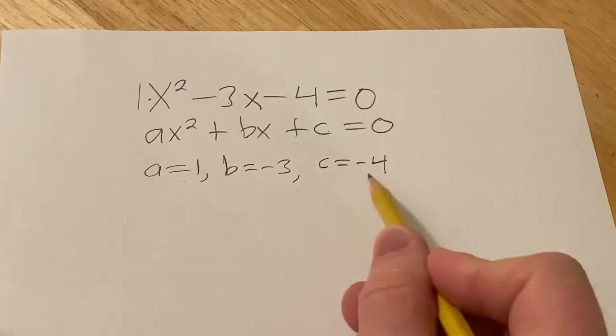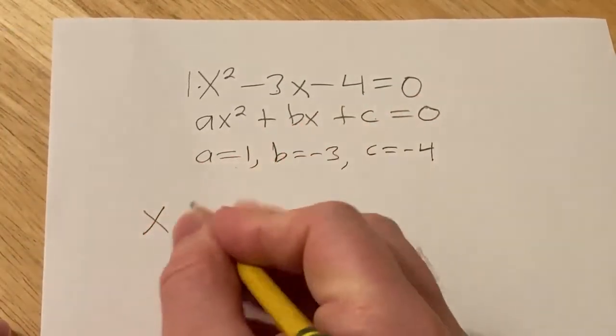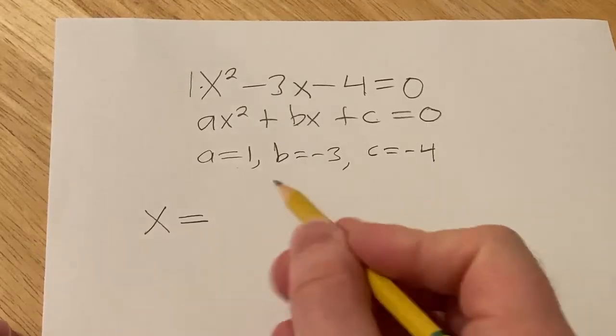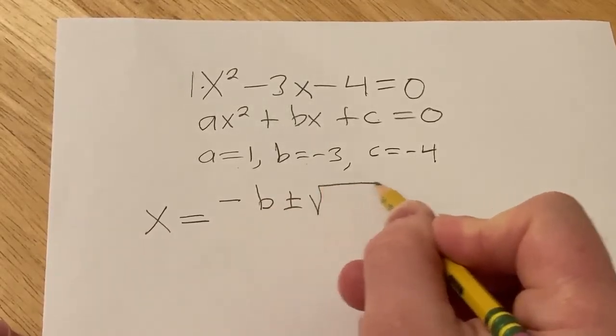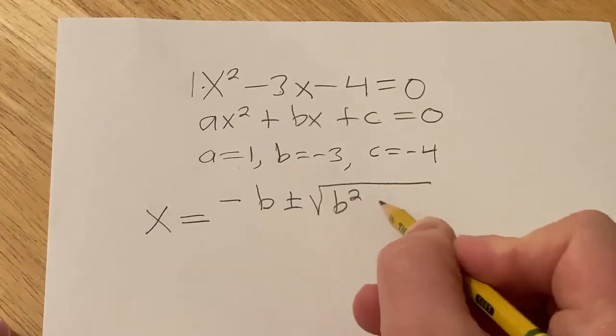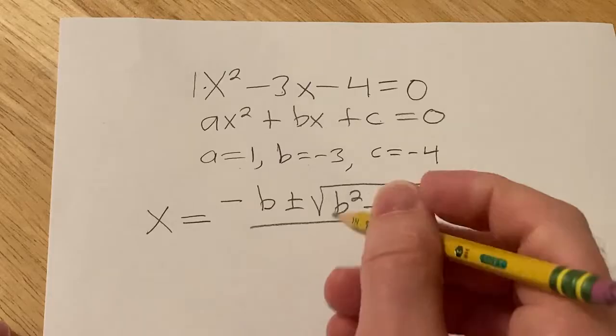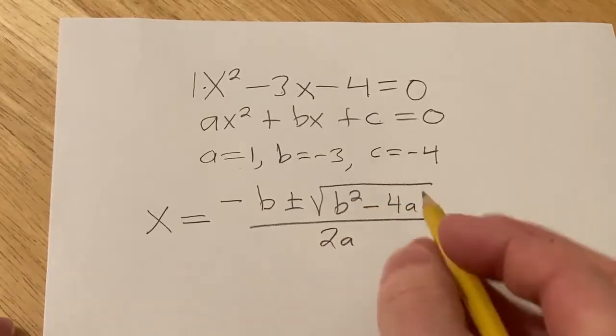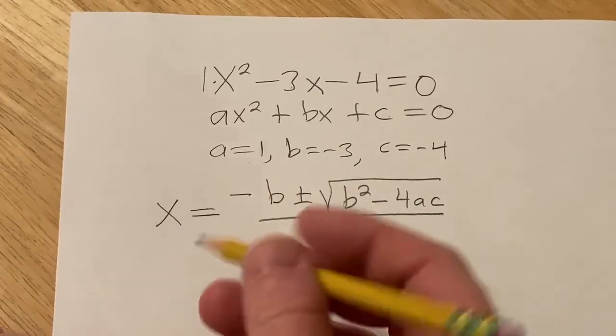And so now we have a, b, and c, so we can use our formula. The formula says that x is equal to negative b plus or minus the square root of b squared minus 4ac, and all of this is divided by 2a. So now all we have to do is plug a, b, and c into this formula and we can get the answer.